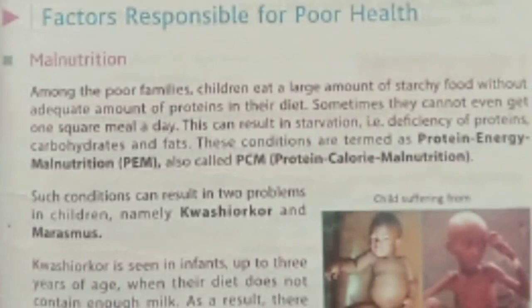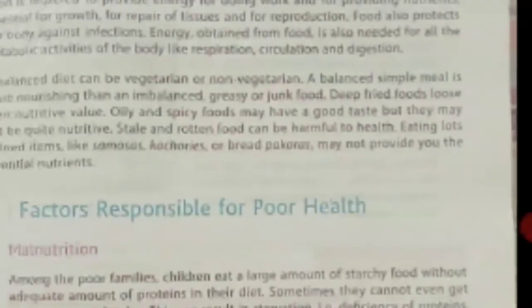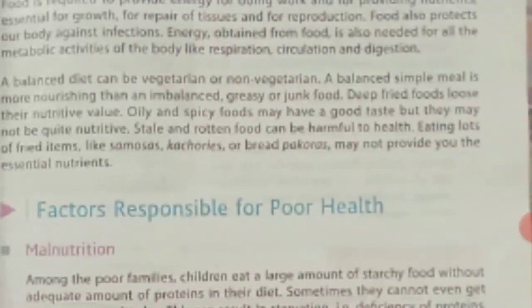A child suffering from marasmus is starving — not getting enough food. When a child does not get enough food, the body becomes deficient and the bones become very weak. This is due to deficiency of protein in their diet; they cannot get enough food.